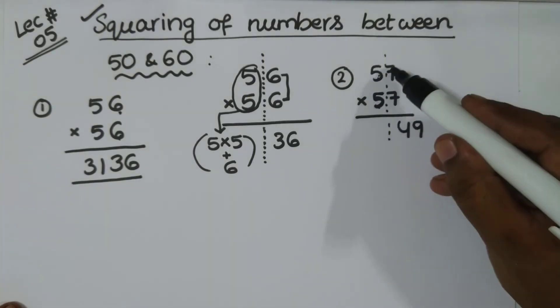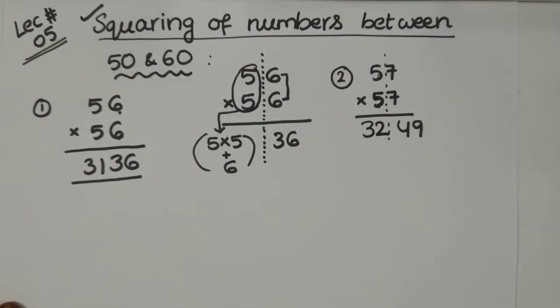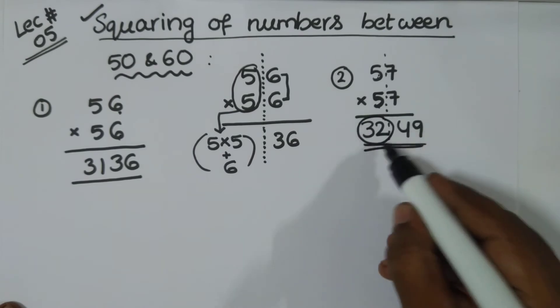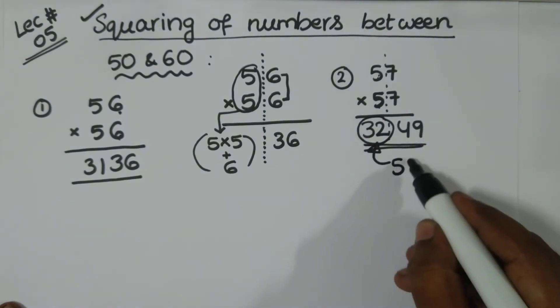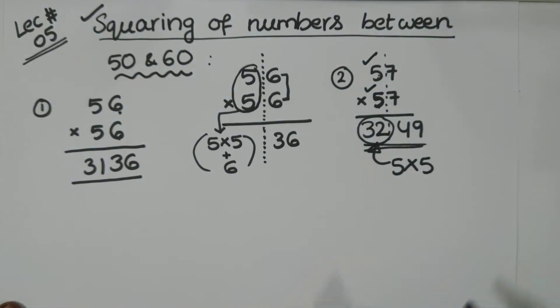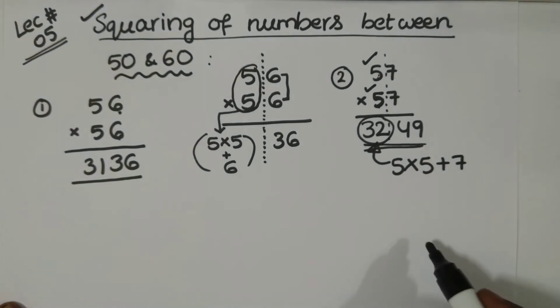4. Now, 5, 5 is 25 plus 7, 32. That's it. So, 3, 2, 4, 9 is the answer. How did I get this one? This is just multiply these two in the left hand side plus add any one. Add any one 7 in the right hand side. That's it. Okay?